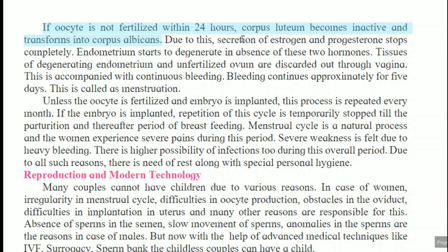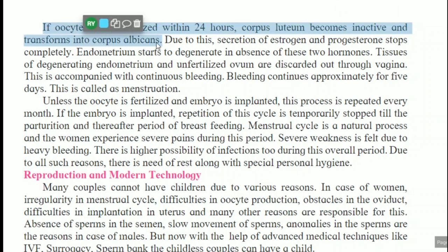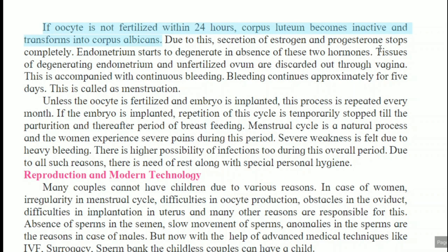If fertilization has not happened, then the corpus luteum, which was secreting progesterone to support implantation, becomes inactive and gets converted into corpus albicans. Due to the formation of corpus albicans, secretion of estrogen and progesterone stops completely. Because fertilization has not happened, the endometrium wall that was prepared starts to degenerate and break down due to the absence of these two hormones.